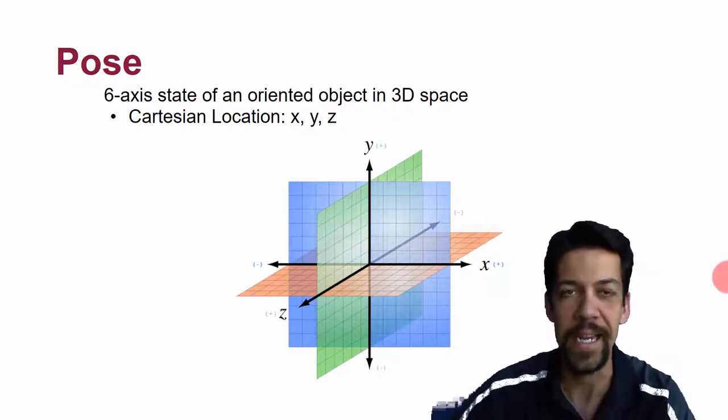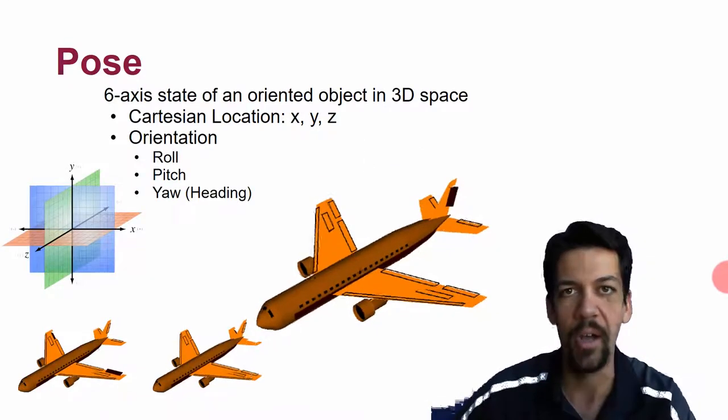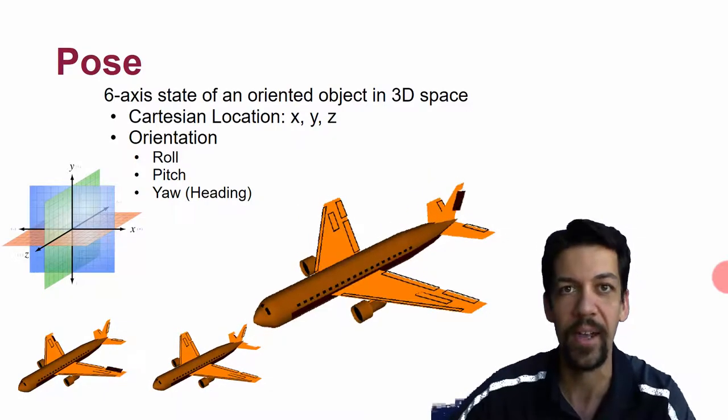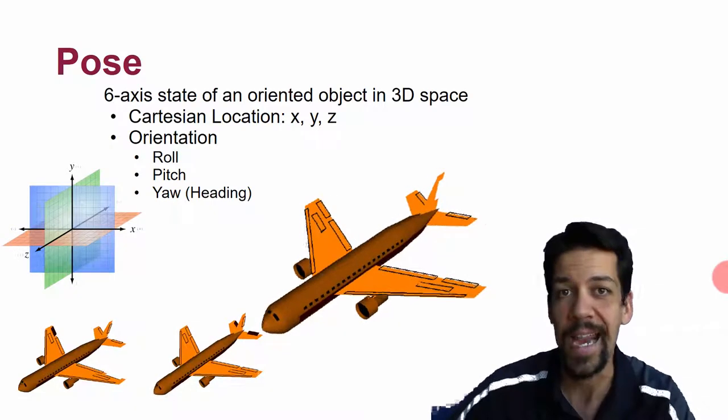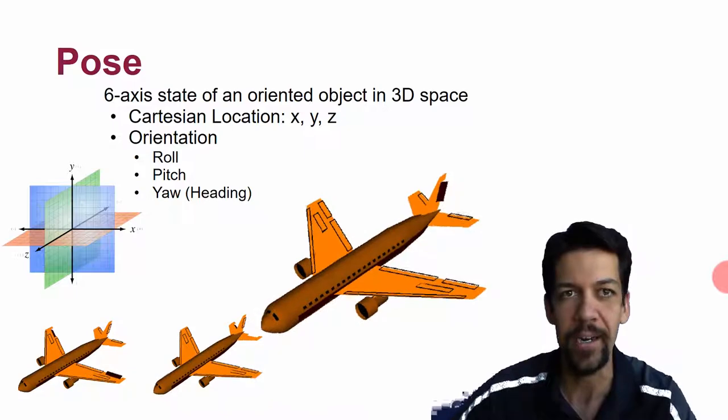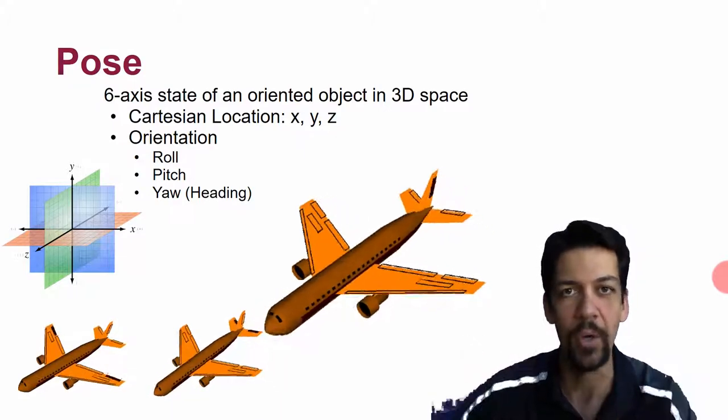We can think of it as the XYZ coordinates in addition to the roll, pitch, and yaw of the system. It's the three coordinates of position in three-dimensional space and the three angles of rotation. We get an entire position and orientation tied up in what we call pose.